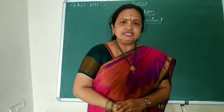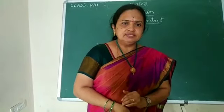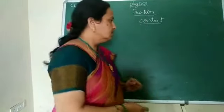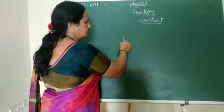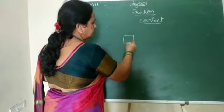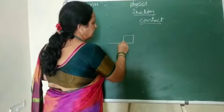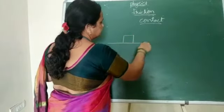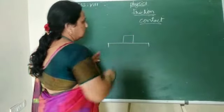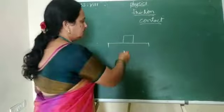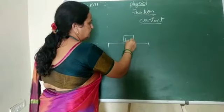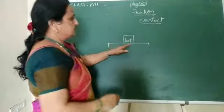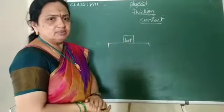Today I am going to explain this. Take one of the books and place it on the table. This is a book, and it is just kept on the table.